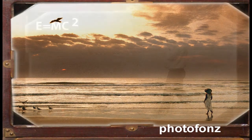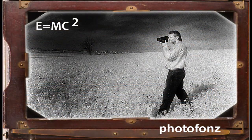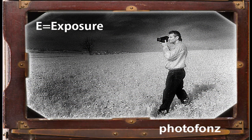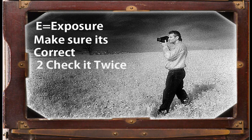What is that formula? E equals MC squared. E equals exposure. The MC is: make sure it's correct and check it twice. It's that simple, but very important. Make sure your exposure is correct and check it twice just to be sure.